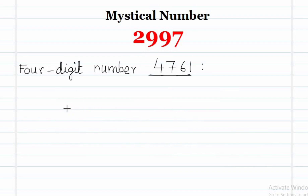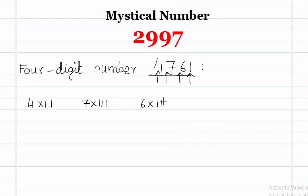We now take the example of the four digit number 4761. The digits of this number are 4, 7, 6, and 1. Let us multiply each digit by 111 and add them: 4 into 111, 7 into 111, 6 into 111, and 1 into 111. Adding all the terms, we get 1998.